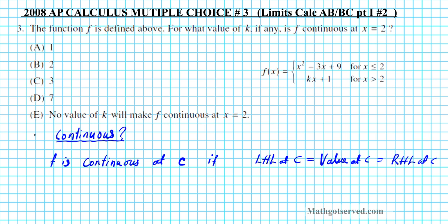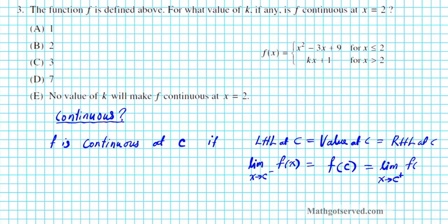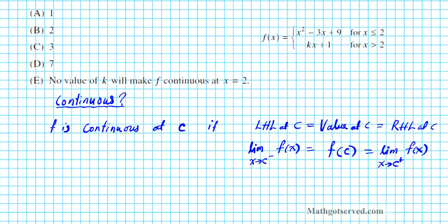All three have to be the same in order for the function to be continuous at c. Symbolically, how do you express this idea? You simply say the left-hand limit is the limit as x approaches c from the left of the function. Whatever you get there has to equal f evaluated at c, and that has to equal the right-hand limit, which is the limit as x approaches c from the right of the function.